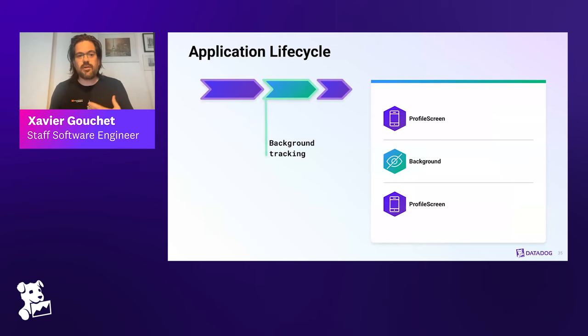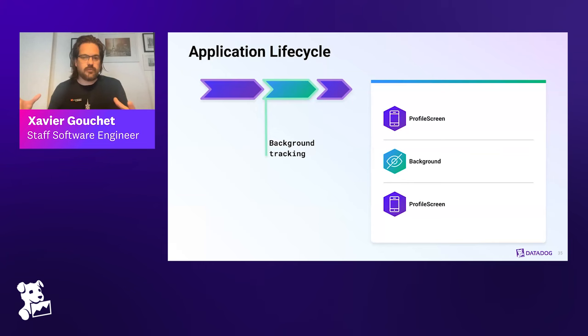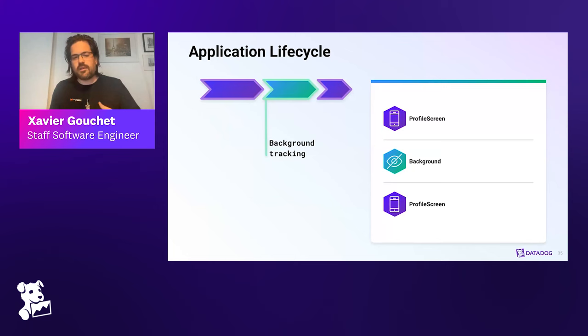Once the application is alive, it's going to eventually go into the background when you switch to messaging or answer a phone call. But the app can still perform operations in the background — syncing with a server or downloading content. This is still information our customers might want. In the RUM architecture, we create a fake virtual view to hold all events happening in the background. This is opt-in, so people have to ask for it, but we can track what's happening when the application is not visible — for instance, if there are too many network requests or if an error occurs.